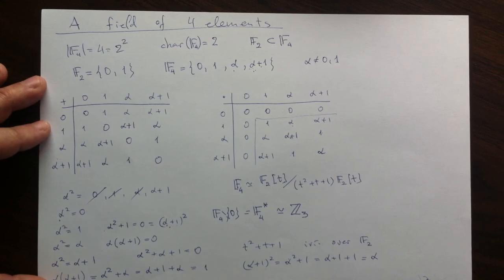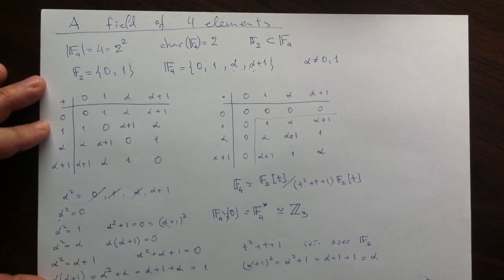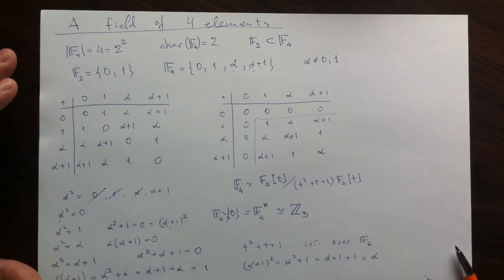So that is another generic, an instance of generic feature, that elements, non-zero elements of a finite field, will form a multiplicative group. And this group, as we checked before, will have to be cyclic. I'll stop now. Bye.